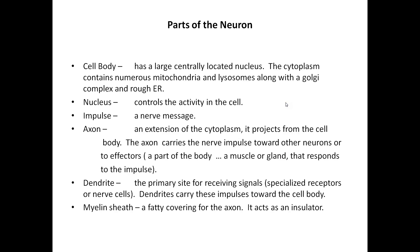The myelin sheath is a fatty covering for the axon that acts as an insulator. Nerves within the brain that contain the myelin sheath — called myelinated fibers — along with a neurolemma are referred to as white matter. Other nerve cells in the brain and spinal cord, referred to as gray matter, lack the myelin sheath and will not regenerate after injury — damage to the gray matter is permanent.